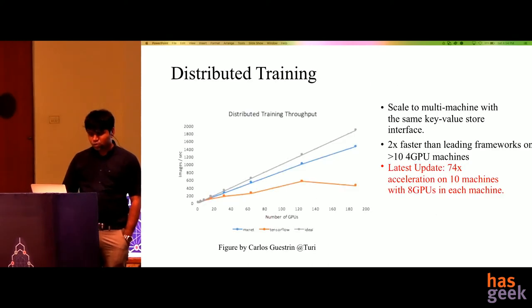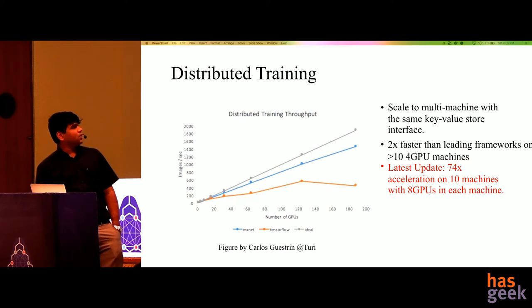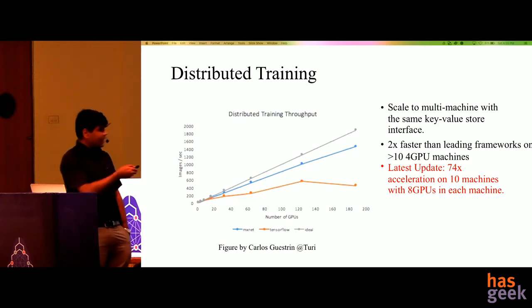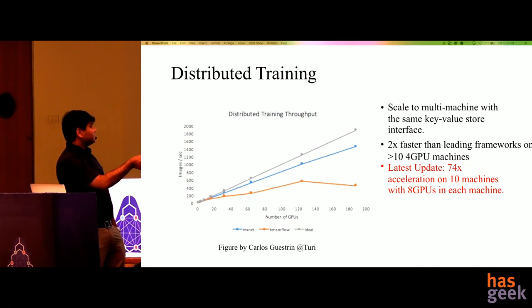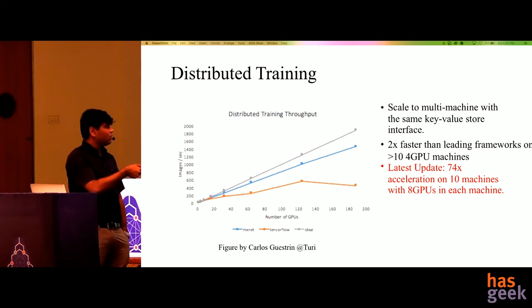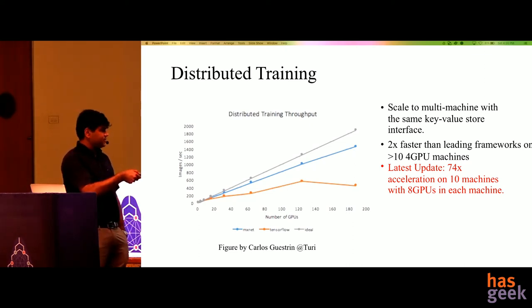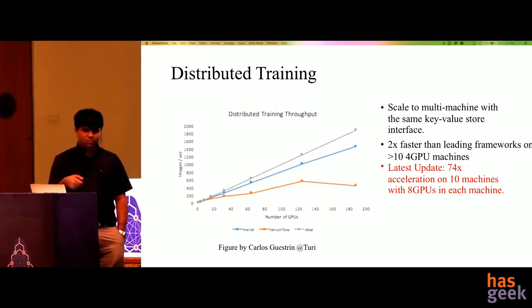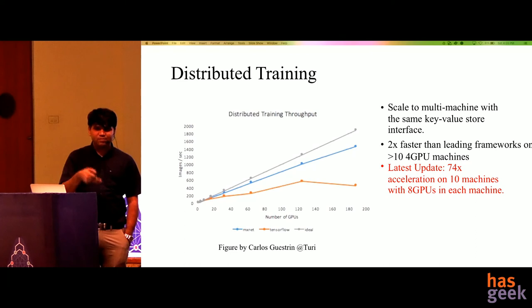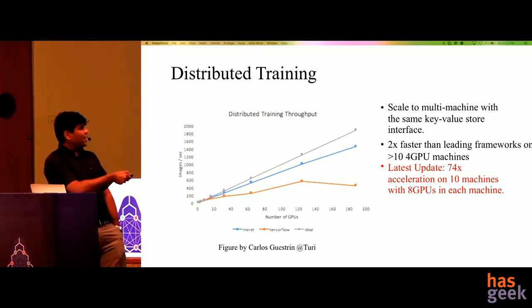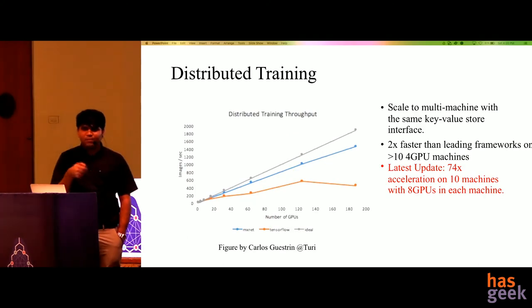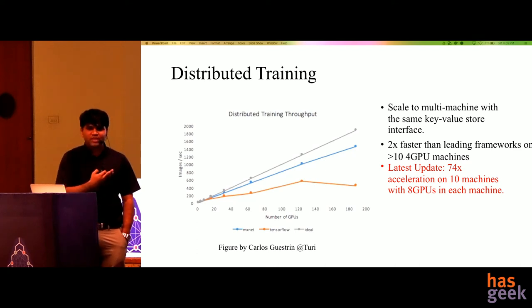In this graph, the gray line indicates ideal performance and the blue line indicates MXNet's performance, which almost follows the ideal. The yellow line indicates performance of frameworks that don't optimize memory aggressively. You can see that if you add a large number of machines but your framework doesn't optimize memory efficiently, there is no benefit you are deriving. Since MXNet handles memory so efficiently, performance scales near linearly with the number of machines you add.